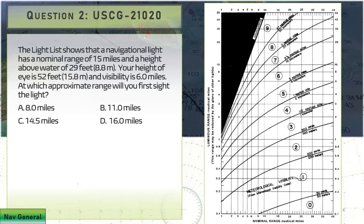The light list shows that a navigational light has a nominal range of 15 miles and a height above water of 29 feet. Your height of eye is 52 feet and visibility is 6.0 miles. At which approximate range will you first sight the light? We're going to put our baseline nominal range on the chart, that's 15 nautical miles. We're going to take a look at our visibility conditions which are 6 miles, that puts us in clear conditions, code 7, about close to this five and a half line. That's going to be somewhere around here, about 11 nautical miles for our luminous range.